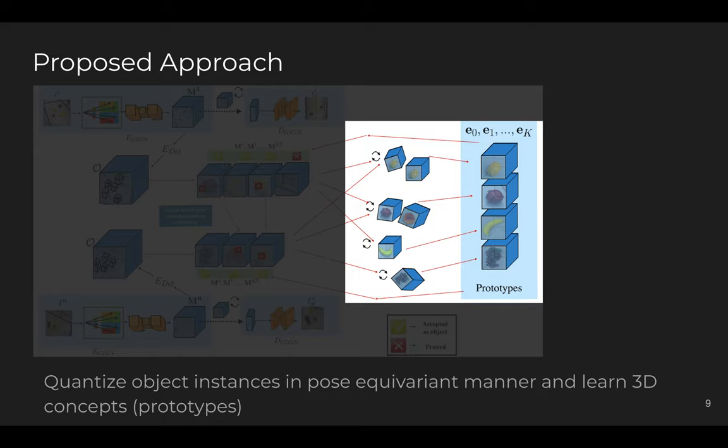After that, we try to compress the extracted objects into a set of prototypes. These prototypes can be initialized randomly and we hope they ultimately end up capturing the objectness and the objects in canonical poses. Once we have cropped objects, we apply non-parametric rotation, check and try to match these cropped objects with the prototypes, and finally compress them to improve our prototypes even more.